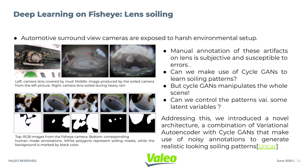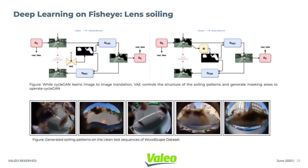To address this, we introduced a novel architecture based on variational autoencoders and CycleGAN. While CycleGAN learns image-to-image translation, VAEs control the structure of the soiling patterns and generate masking areas to operate the CycleGAN. Here are a few realistic-looking soiling patterns generated by our network.